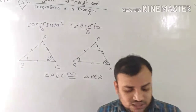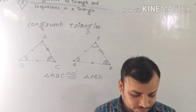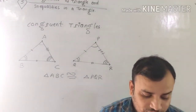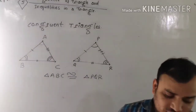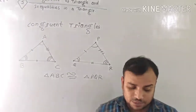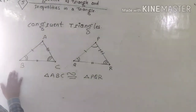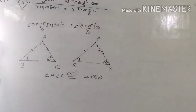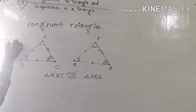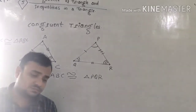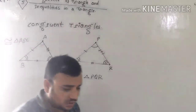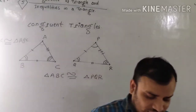Now, the congruence relation in the set of all triangles: every triangle is congruent to itself. That means triangle ABC is congruent to triangle ABC — every triangle is congruent to itself.